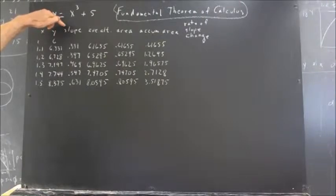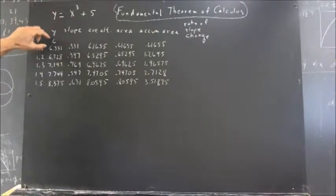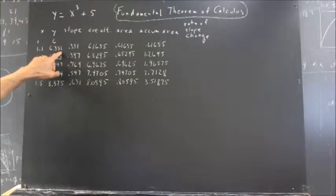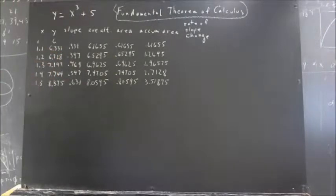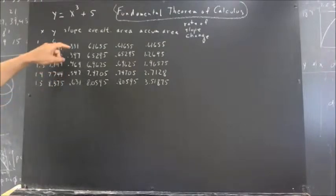Okay, so we calculate slopes. So the first slope, from here to here, the rise is 0.331, and the rise divided by the run is 0.331 divided by 0.1, and that should be 3.31.